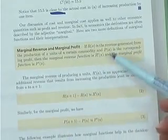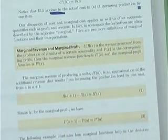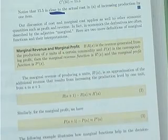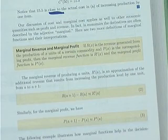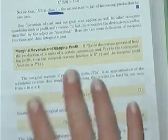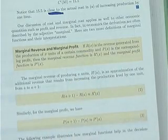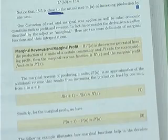Then marginal revenue, marginal profit — the same idea. The extra profit you get from the production and sale of one more item. What's the difference between profit and revenue? Revenue is how much money you take in from the sale of your items. Profit is revenue minus your cost, and that tells you what your profit is.